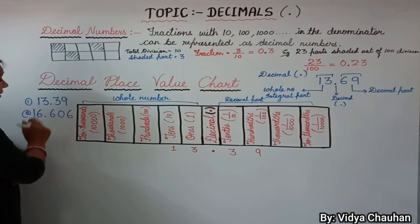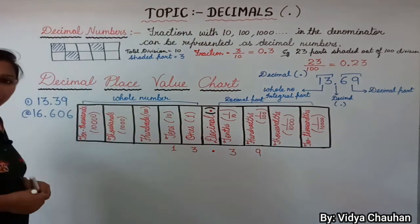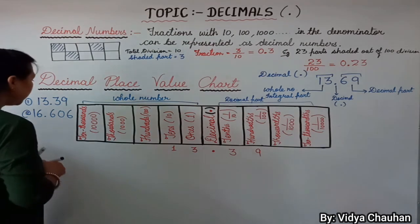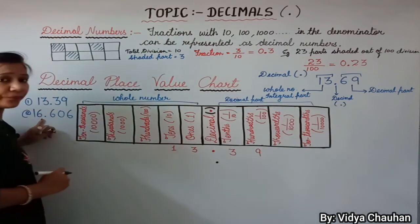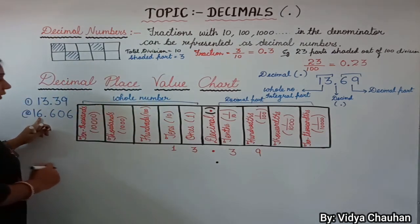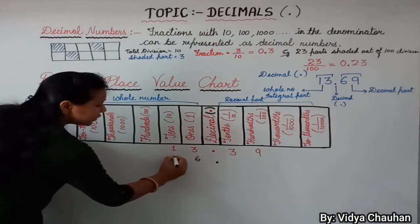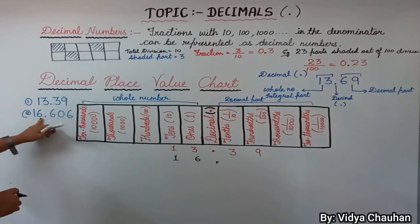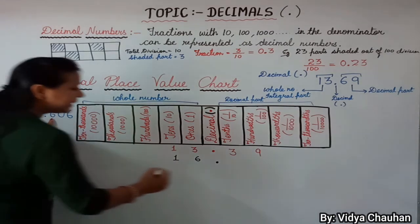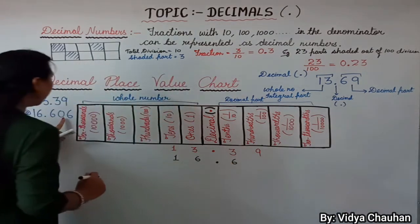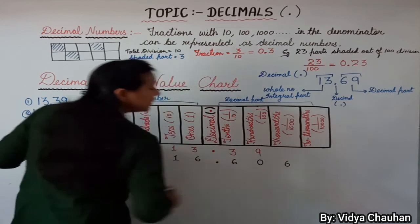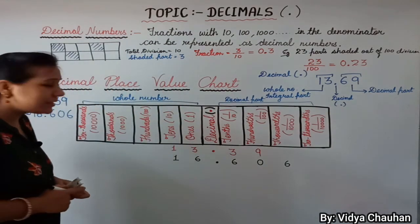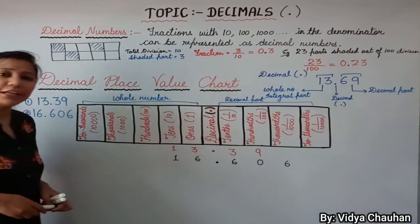Similarly, for the second number 16.606, we start with the decimal in the center. For the integral part: 6 at ones and 1 at tens. For the decimal part: 6 at tenths, 0 at hundredths, and 6 at thousandths. This is how we represent decimal numbers on the decimal place value chart.